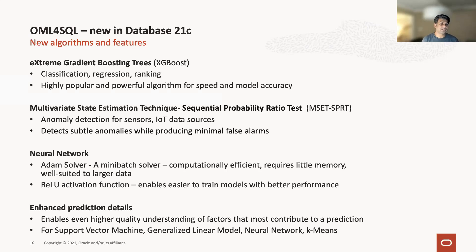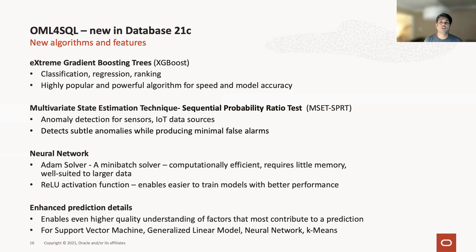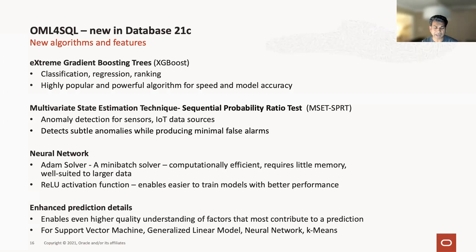The third new addition: the Adam optimizer as well as the ReLU activation functions have been available in the public domain, but we've built them in such a way that they are computationally efficient, require very little memory, and can operate on extremely large datasets for neural network functions. The ReLU activation function is a linearized function — when you pass data through it, if the data is greater than a certain value, it gives you that input; otherwise it returns zero. This allows you to train models a lot faster. We've built some of these activation functions into the in-database algorithms.